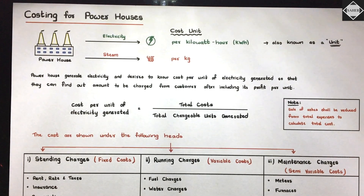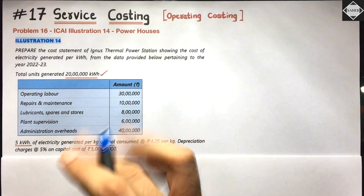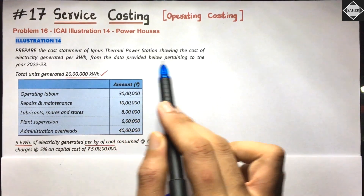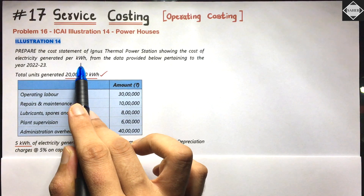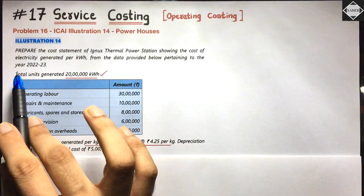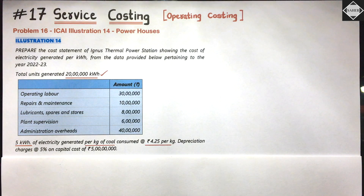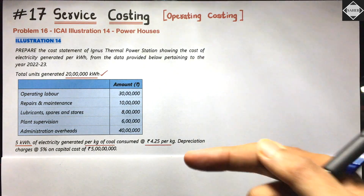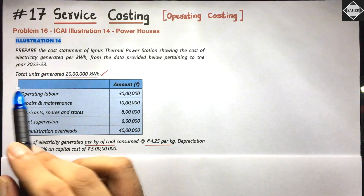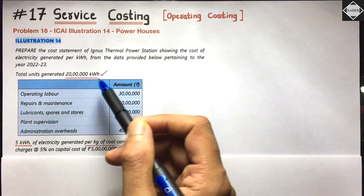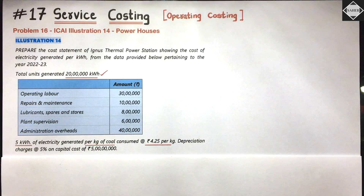Now let's go to Illustration 14. The question asks us to prepare the cost statement of Ignis Thermal Power Station showing the cost of electricity generated per kilowatt hour, from data pertaining to the year 2022–2023. All data given is yearly. The total units generated are 20 lakh kilowatt hours — this is our denominator directly.